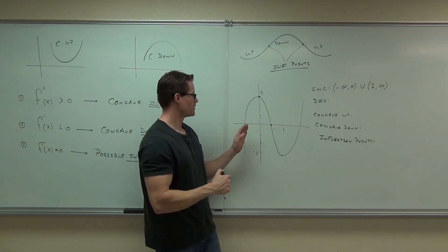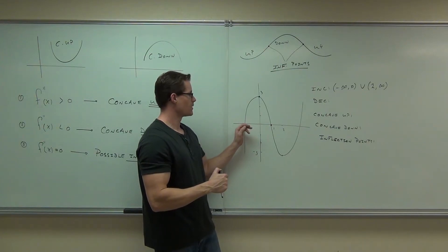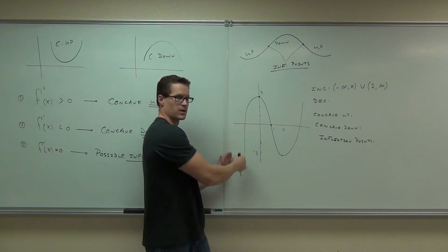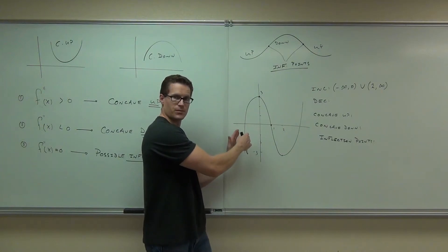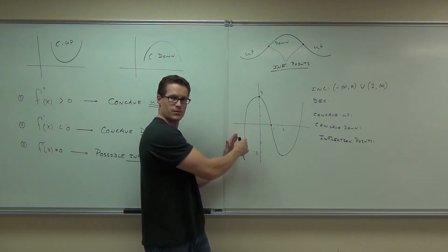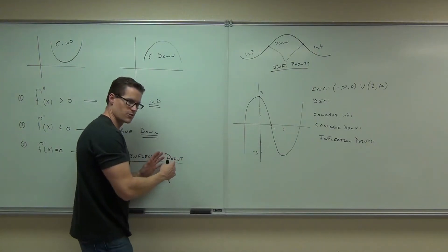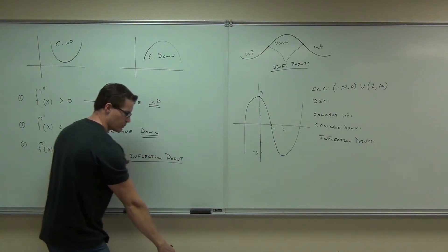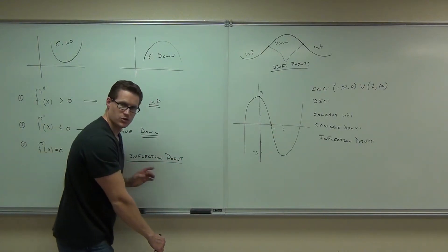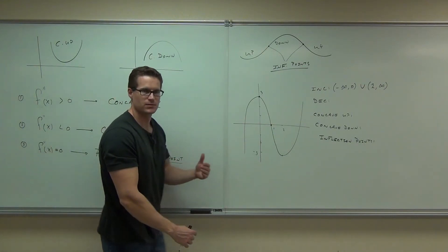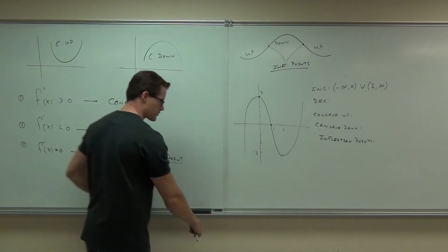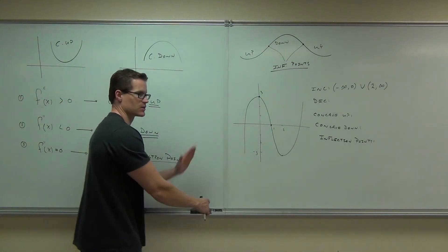At that point where it crosses the x-axis the first time — right here — we're still increasing from here as well. We always read from left to right. So we're saying when we start this function at negative infinity, because it never ends, when we start this function, it's automatically starting to go up.